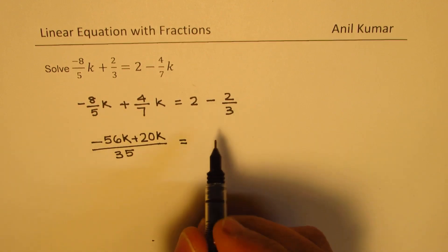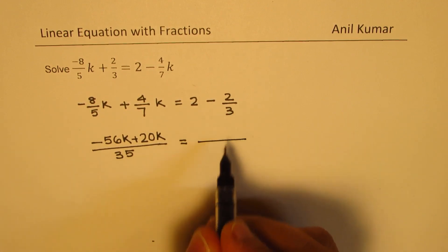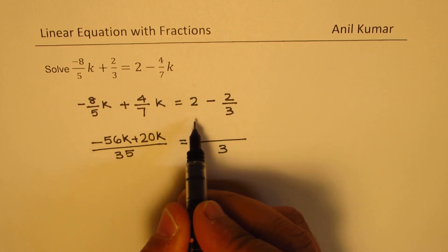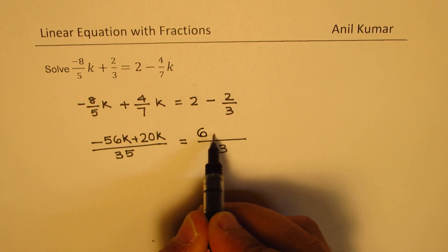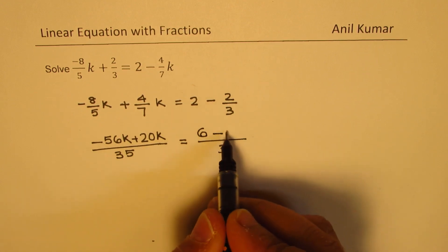On the right hand side we have a common denominator of 3. 2 is a whole number, 2 over 1. So 2 gets multiplied with 3. We get 6 here, minus. 3 is already there. So minus 2.